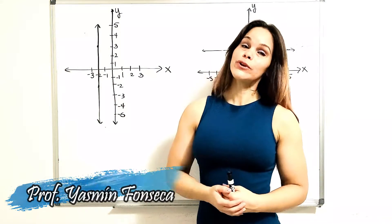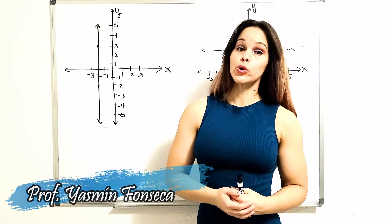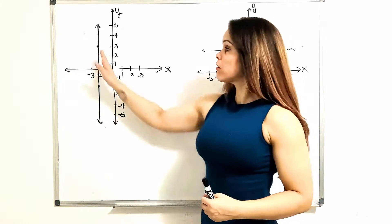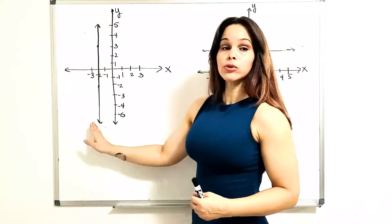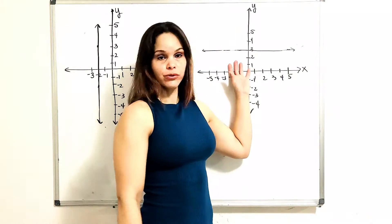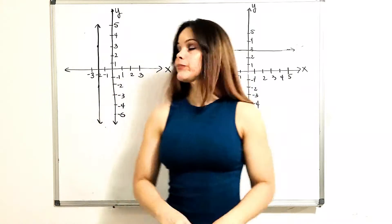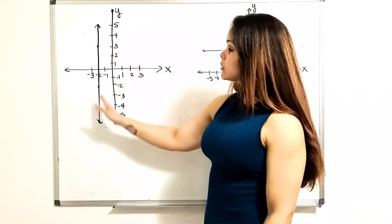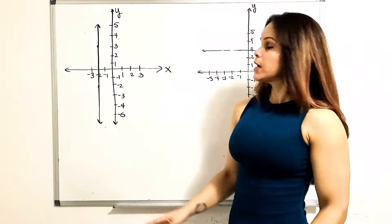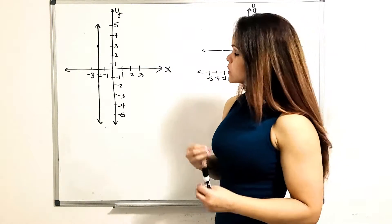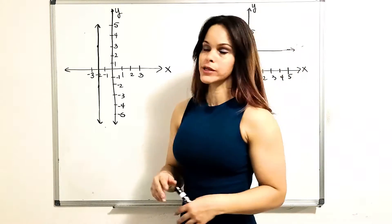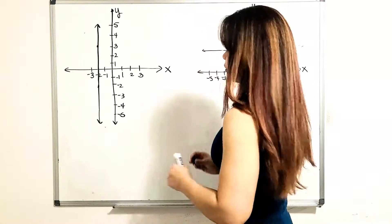Hi everyone. In this video I'm going to show you what is the equation of a vertical line and what is the equation of a horizontal line. For a vertical line, we have an example here, and I'm going to identify two random points in this line.